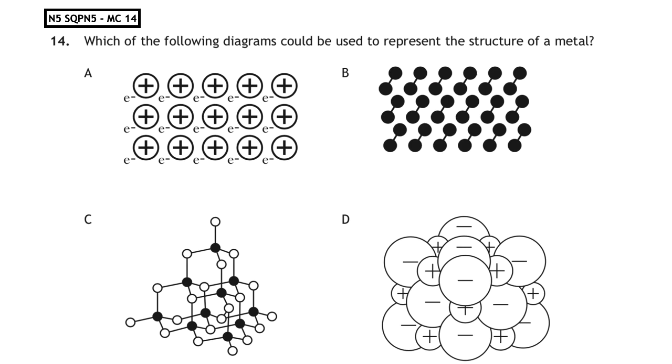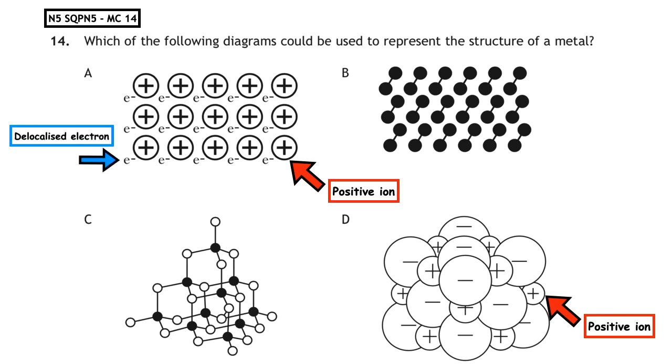This past paper question is from the National 5 specimen paper, multiple choice 14. Which of the following diagrams could be used to represent the structure of a metal? Well, again, we know that metals lose electrons to form positive ions. At the moment, the only ones that show positives are multiple choice answer A and D. But we know that when they lose electrons, those electrons don't disappear. We should be able to see an electron which is represented by the letter E and a little negative charge. That tells us that multiple choice answer A is the correct answer.